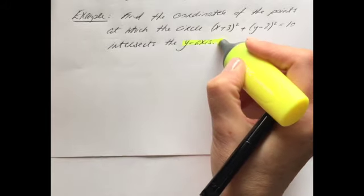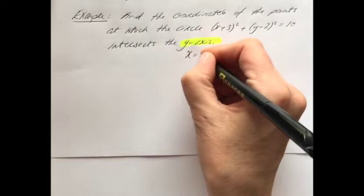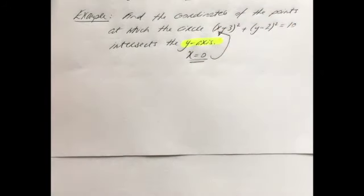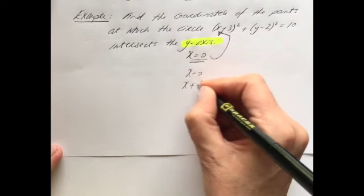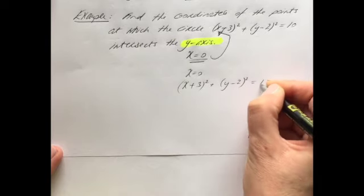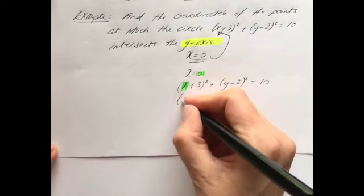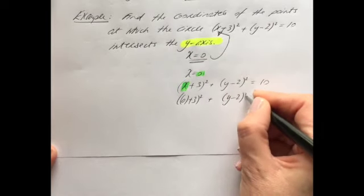Final example: find the coordinates of the points at which the circle x plus 3 all squared plus y minus 2 all squared equals 10 intersects the y-axis. It's asking where the circle cuts the y-axis, so immediately you should spot that the equation of the y-axis is x equals 0. We're going to take x equals 0 and sub it in for the x in the circle equation. So we get 0 plus 3 all squared plus y minus 2 all squared equals 10.